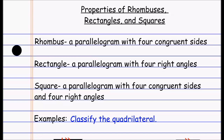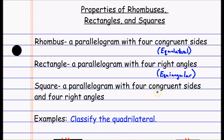A rhombus is equilateral — all sides are congruent — making it the special parallelogram that's equilateral. A rectangle is the special parallelogram that's equiangular, since all four angles are right angles and therefore congruent. A square is both equilateral and equiangular, which makes it a regular polygon — the perfect version of that shape.